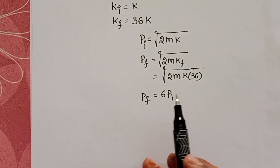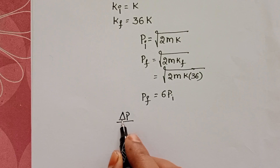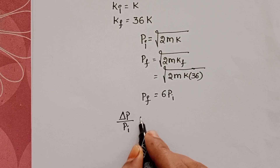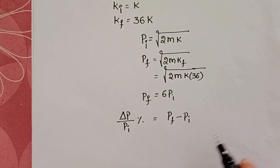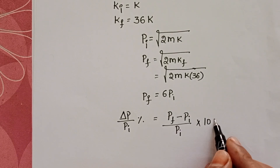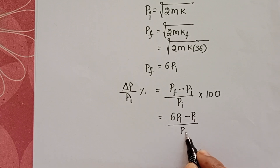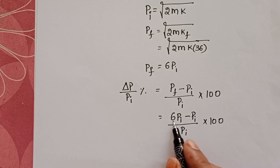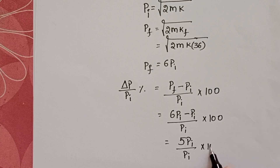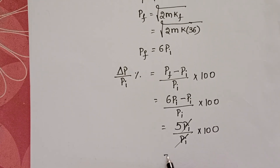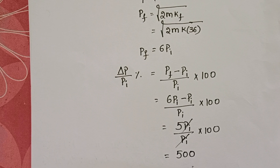Now we calculate the percentage increase in momentum. The formula is: change in momentum divided by initial momentum, multiplied by 100. That gives us (final momentum − initial momentum) / initial momentum × 100 = (6p − p) / p × 100 = 5 × 100 = 500%. The percentage increase in the momentum of the body is 500%.